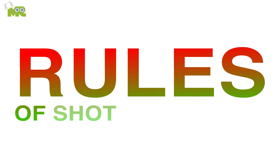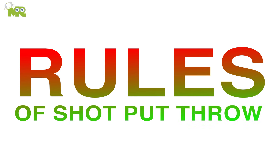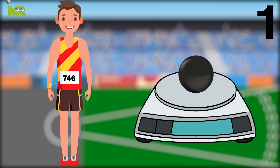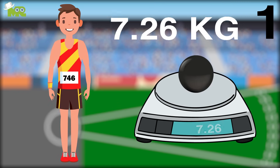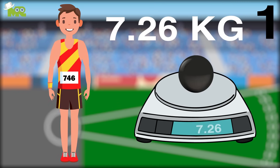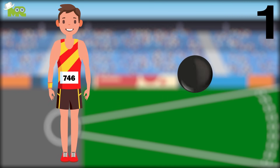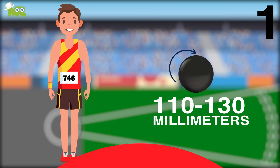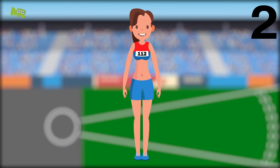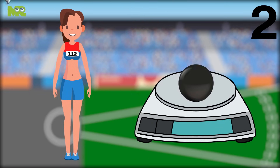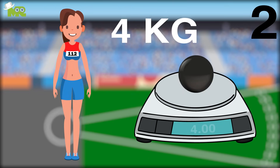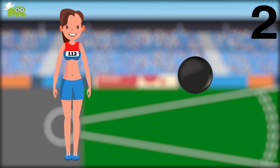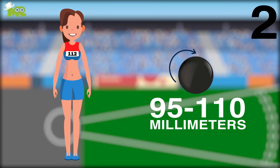Rules of Shot Put Throw: 1. The weight of the men's shot is 7.26 kg, a spherical ball with its diameter between 110 and 130 mm. 2. The women's shot, also a spherical ball, weighs 4 kg and has a diameter of 95 to 110 mm.